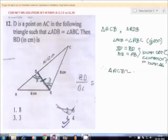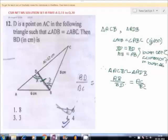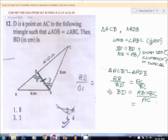Triangle ACB is similar to triangle ADB. Therefore, by property of similar triangles, AB upon BD is equal to AC upon BD. So we find that BD is equal to AB into BC upon AC, that is 6 into 8 upon 10.